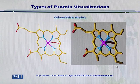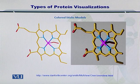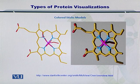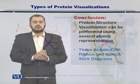A variation of the balls and sticks model is the colored sticks model. In this, the balls are simply removed and the bonds are left, joined and shown in various colors. The colored sticks model can be constructed similarly to the balls and sticks model.